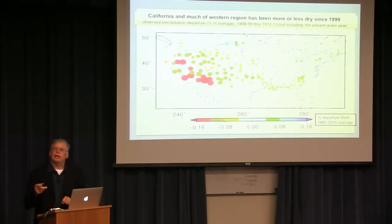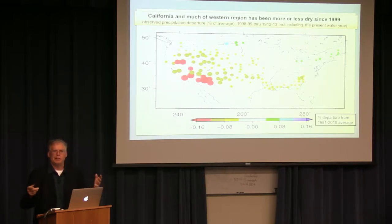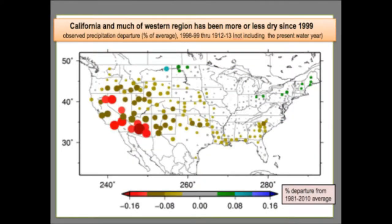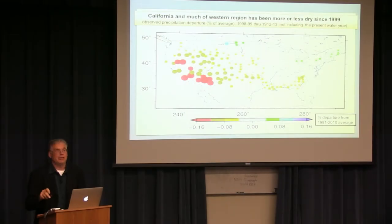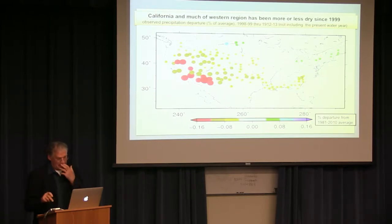Looking at annual totals of Sierra Nevada precipitation going back to 1895, you can see lots of volatility. When you compare the coefficient of variation of precipitation in California to the rest of the nation, we are in a scaled sense the most volatile region in the country. We have in our natural climate already an extreme vulnerability to variability, and as we look forward it's quite possible this could get even more volatile because of the nature of the coming changes. Please feel free to ask questions during the talk — I'd just as soon have a conversation.